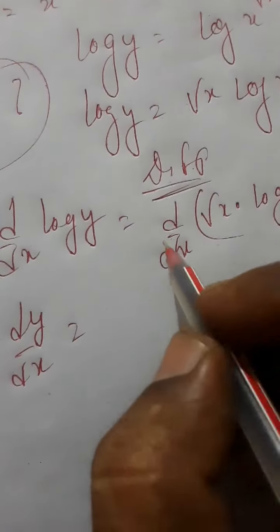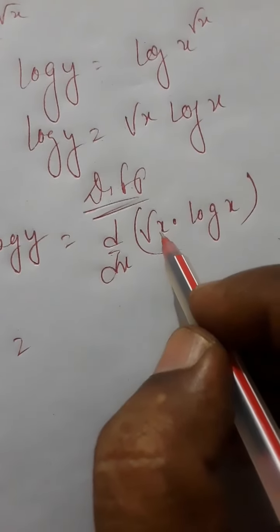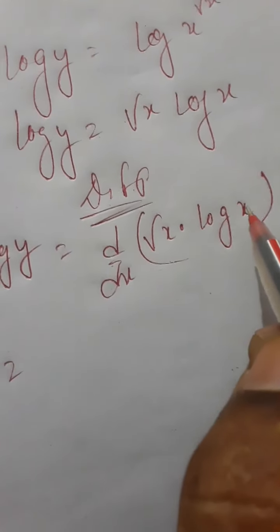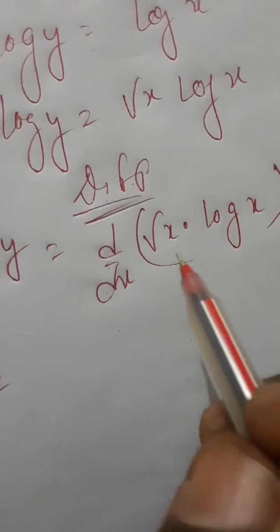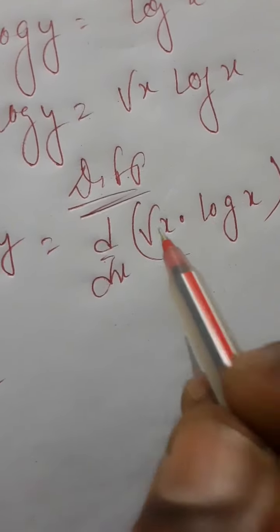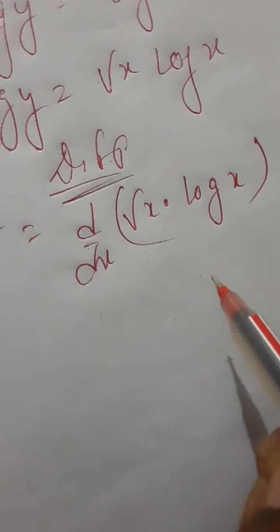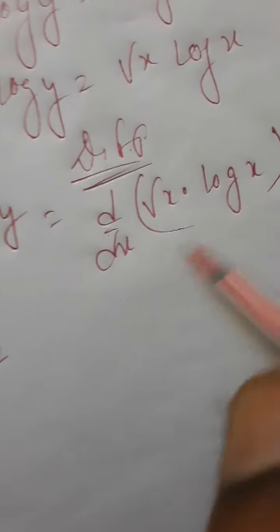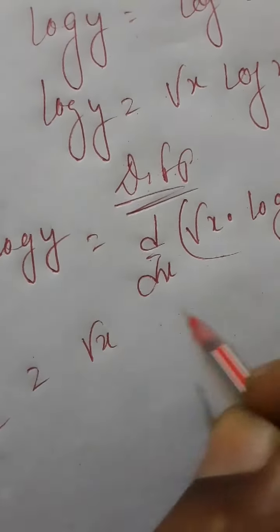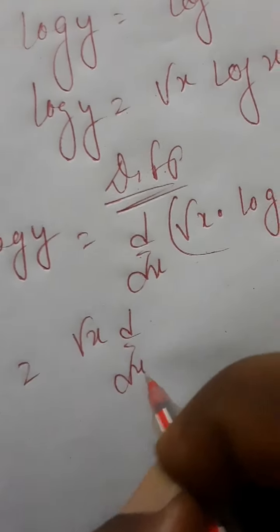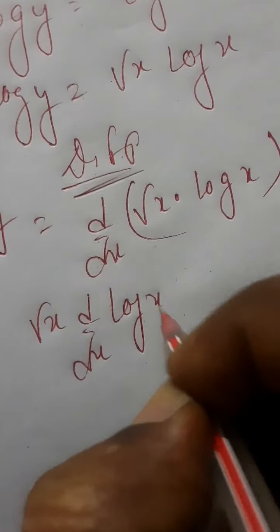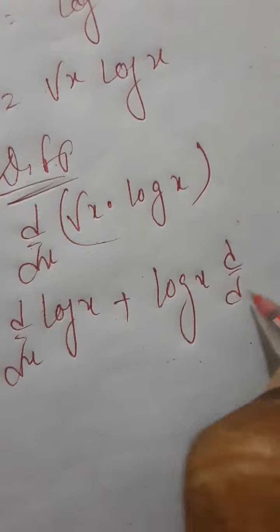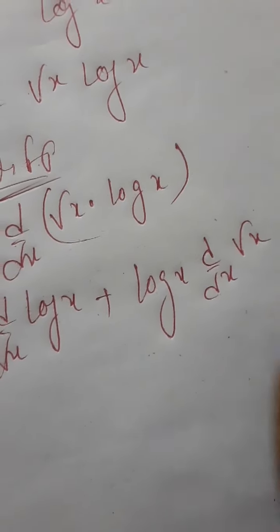The right-hand side, d by dx of root x into log x, is of the form of u into v. We know d by dx of u into v is u into dv by dx plus v into du by dx. So this becomes root x times d by dx of log x, plus log x times d by dx of root x.